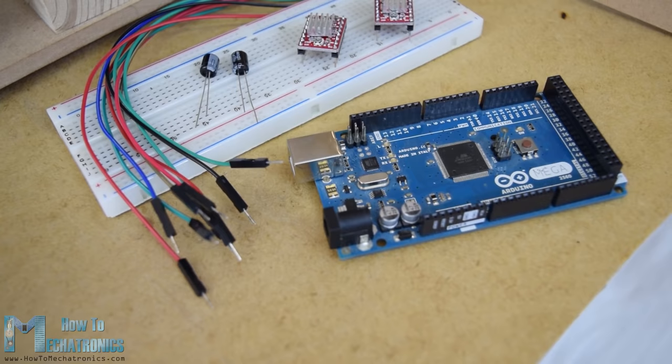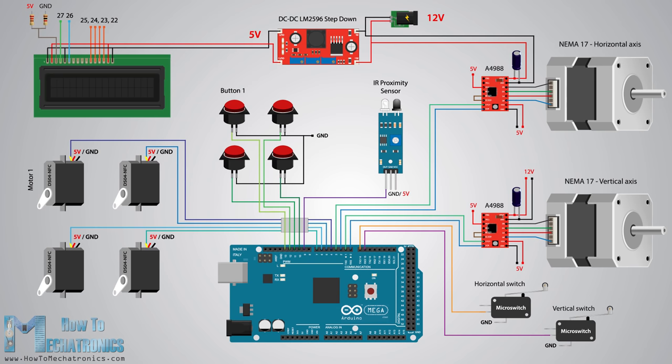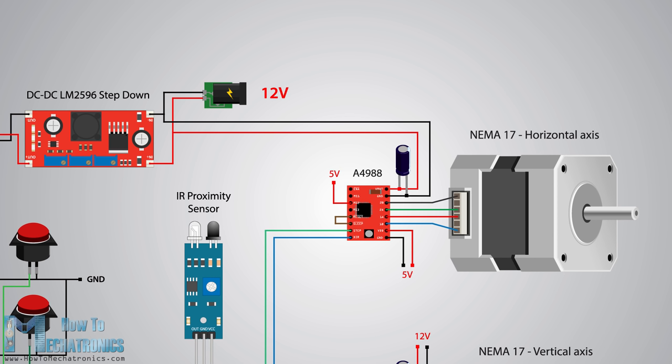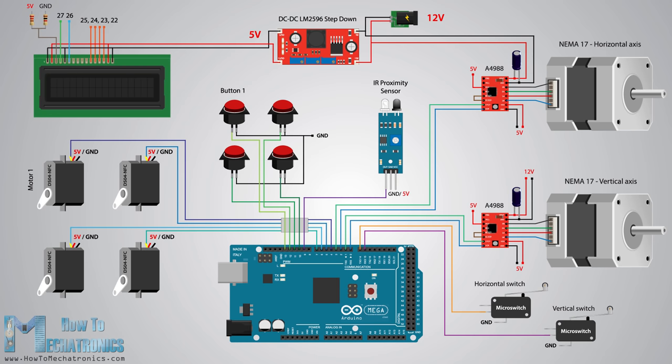Next comes the fun part connecting all electronics components to the Arduino board. Here's the complete circuit schematic for this DIY vending machine project. So we need 12 volts power supply with at least 2 amps. We need the 12 volts for the 2 stepper motors as well as for the LED strip lights which I will later attach on the front door. However for all other components we need 5 volts.